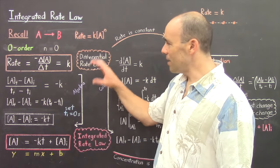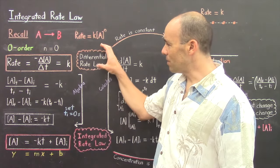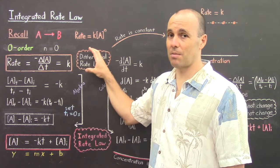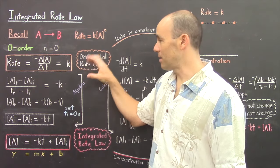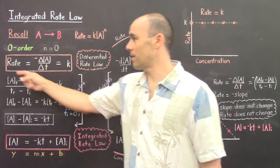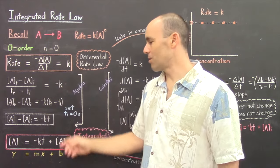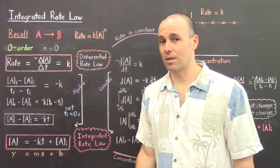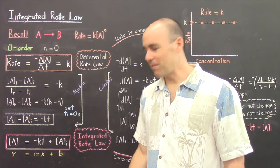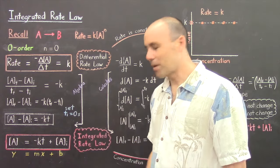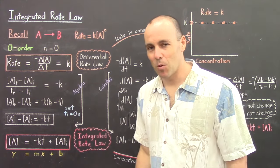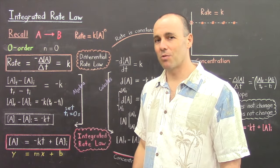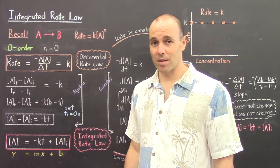So whatever these two equations tell us, we should understand the same thing. The differential rate law is telling us that the rate is constant, and that's what the integrated rate law should also explain. Before we look at that more closely, let's first derive the integrated rate law using calculus.